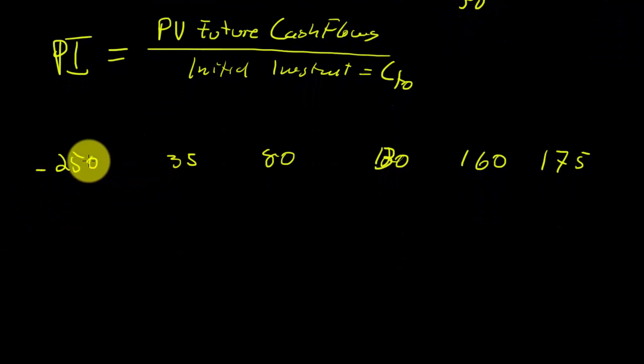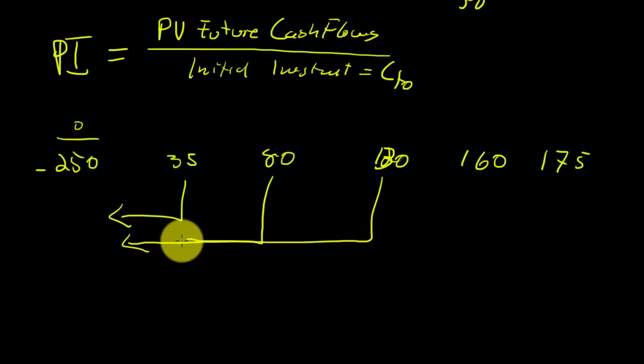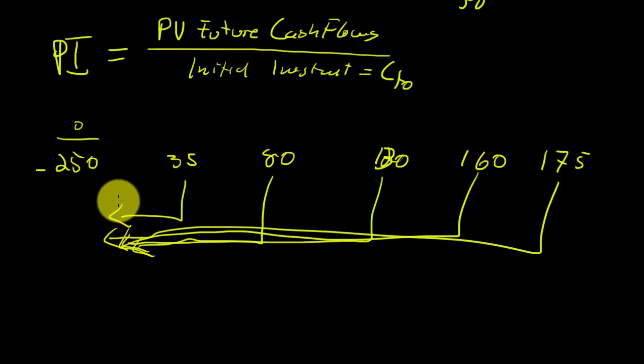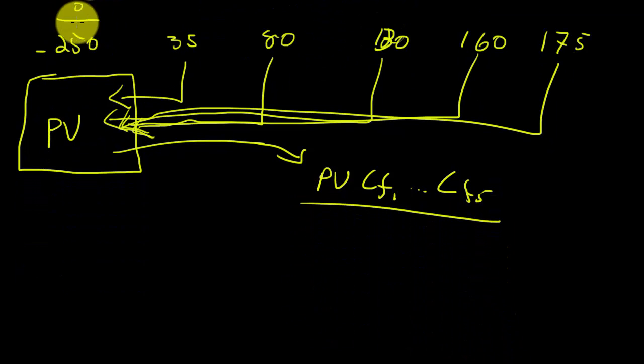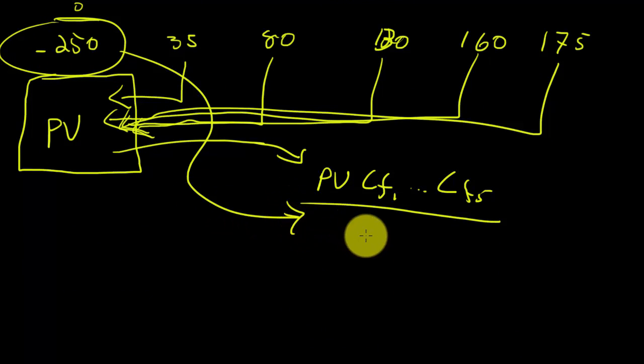And so basically what's going to happen here is I'm going to look at cash flow zero, and I'm going to hold it. And I'm going to take cash flows 35, 80, 130, 160, and 175 and discount them all back to time period zero. I'm going to take all of these, but I'm going to keep these separate. And I'm going to put the present value on the top, and the 250 is going to go on the bottom. That's cash flow zero, which in this case is 250, and that's an absolute value.